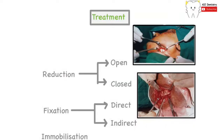For treatment, as with any fracture, we treat mandibular fractures by reduction, fixation, and immobilization. Depending on the type of fracture, age of the patient, and several other factors, reduction can be either open or closed. Likewise, we can undertake either direct or indirect fixation. These will be discussed in detail in upcoming videos. The final step is always immobilization — protecting the part from movement for a period of time to ensure the bone unites without complication.